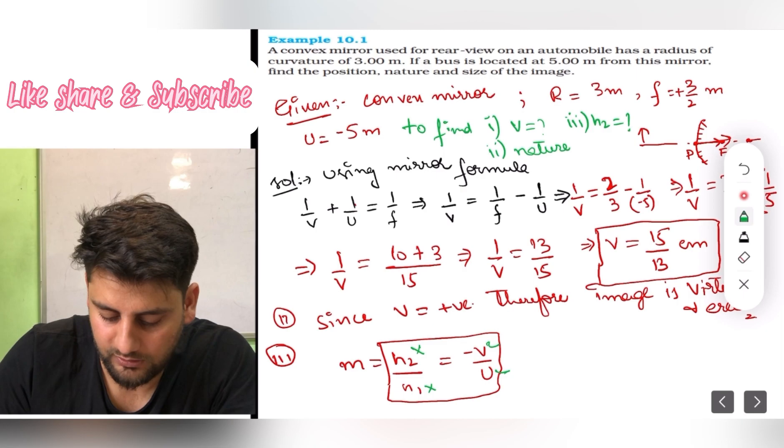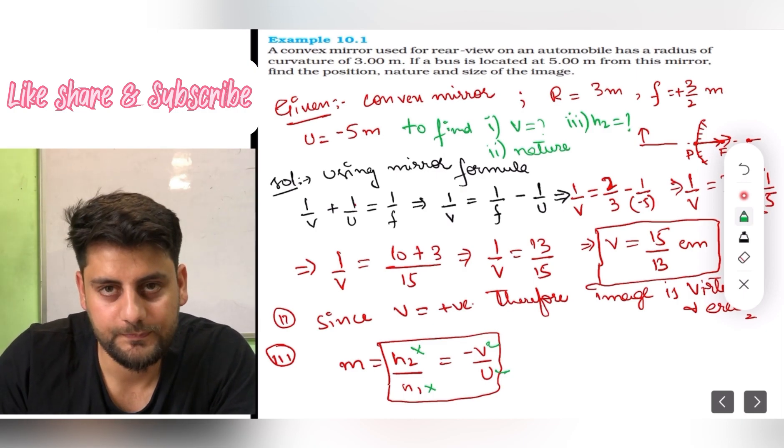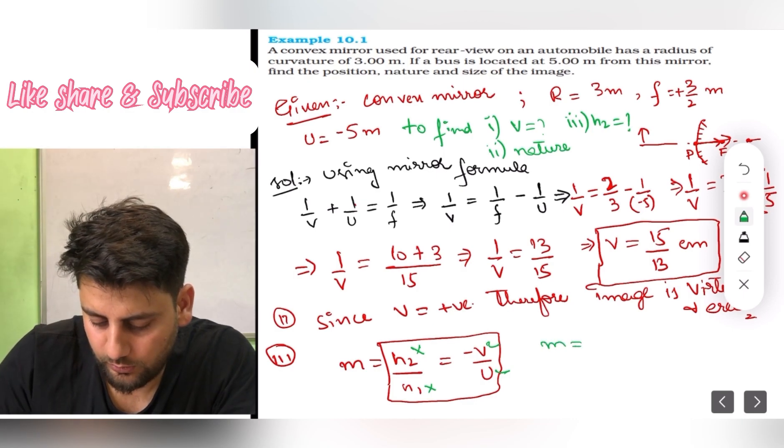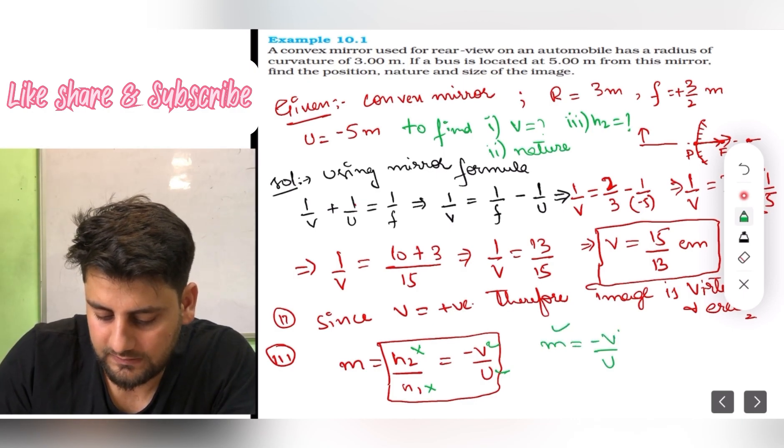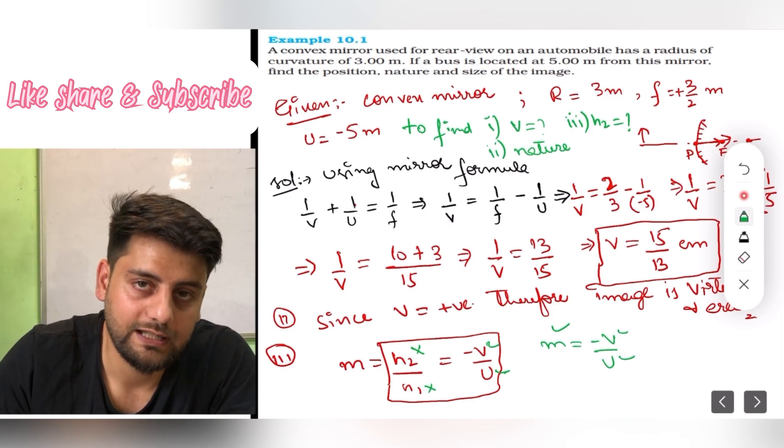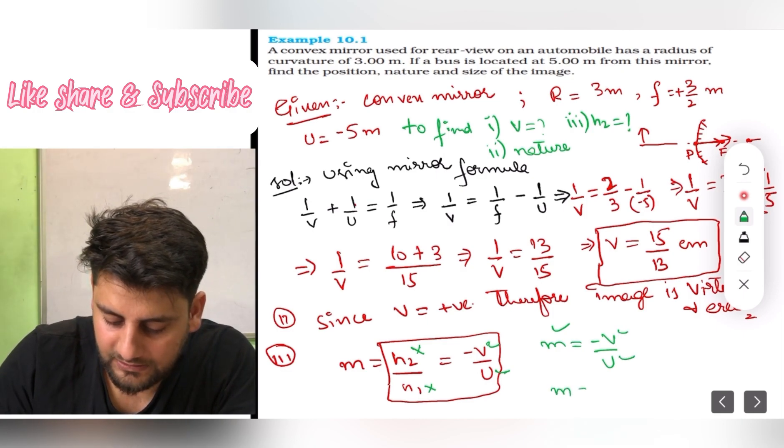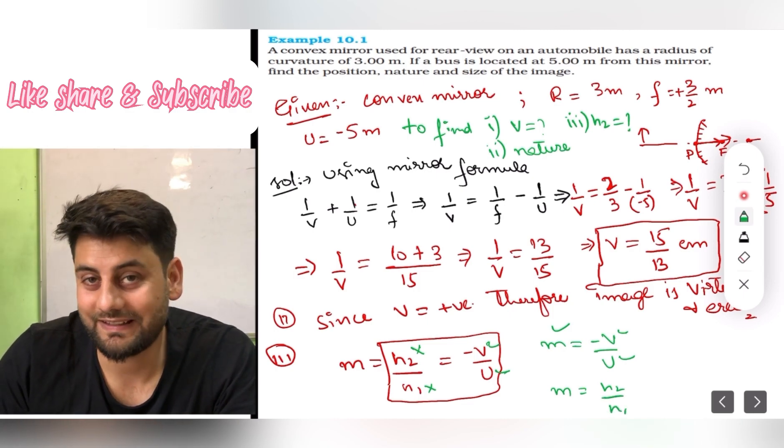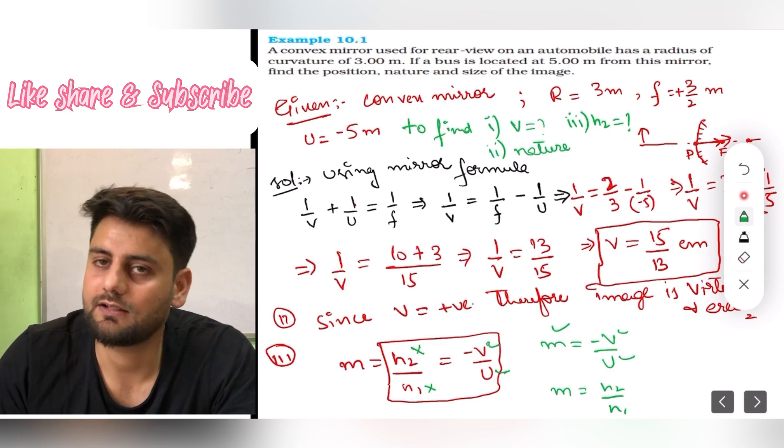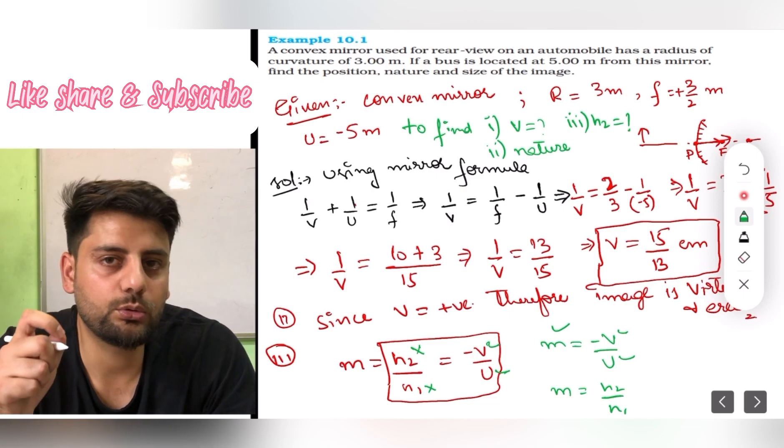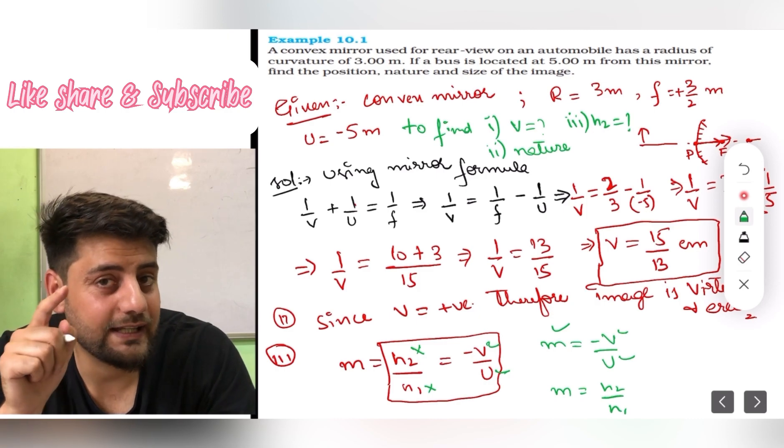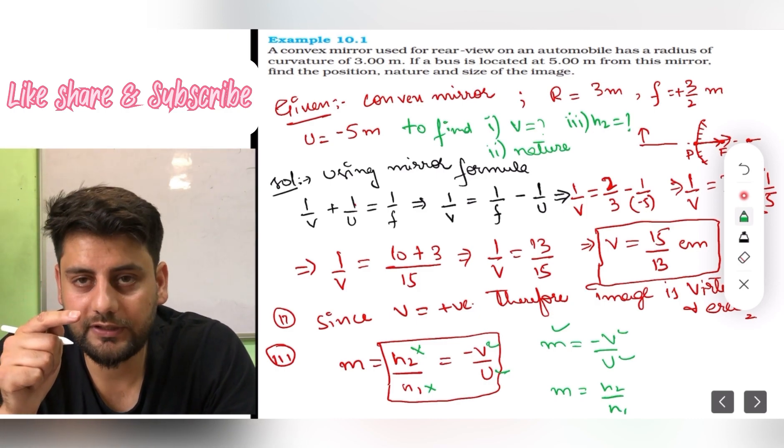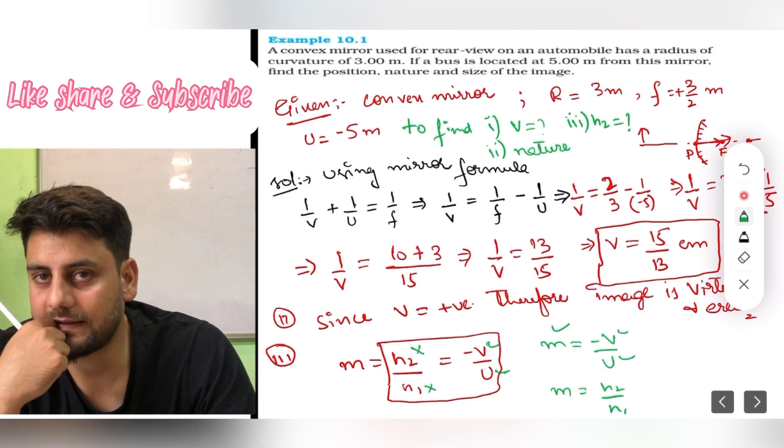If I take this equation, h2 upon h1 equals minus v upon u. How many things I know? Do I know h2? No. Do I know h1? No. In minus v upon u, do I know v? Yes. Do I know u? Yes. So that means in h2 upon h1 equals minus v upon u, two things are known.